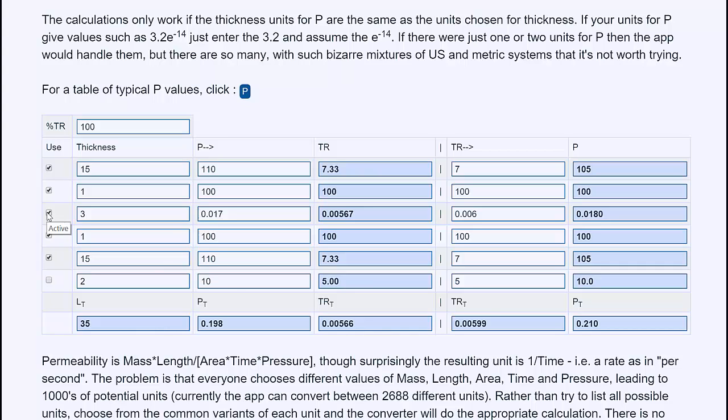So if I take out this layer here, then the transmission rate changes quite dramatically. This will typically be the EVOH layer in a multi-layer package. So that allows you to do quite complicated calculations on multi-layer barriers.